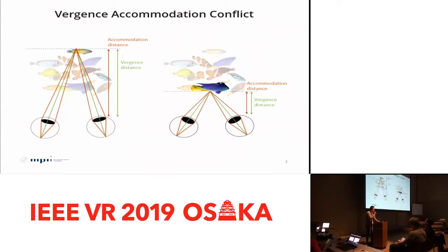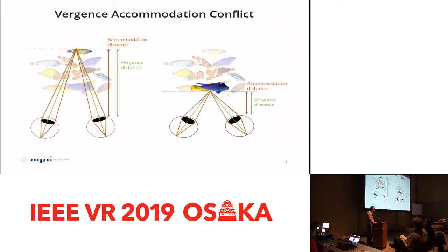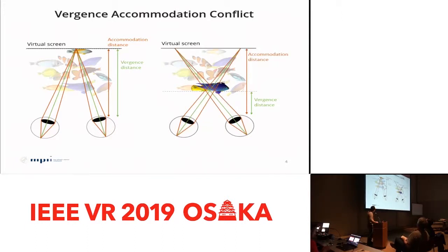Vergence is the binocular eye movement which directs both eyes towards the target, and accommodation is the adjustment of focal power of the eye lens to acquire sharp retinal images. In a real-world viewing situation, when the user looks at far or near objects, these two mechanisms occur consistently. However, in commonly used single-plane 3D displays, those two cues match only at the display plane, and if a user observes objects at different depths, the two cues mismatch — this is called vergence-accommodation conflict.